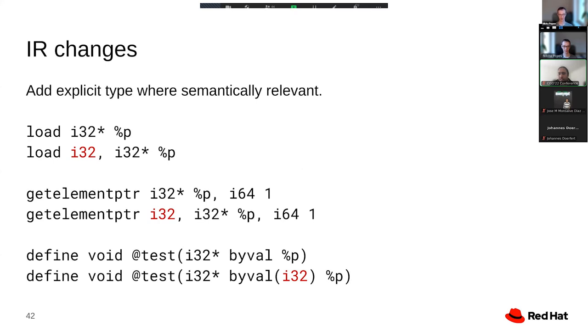At this point I hope I have provided sufficient motivation for why we are doing the migration to opaque pointers and want to talk about the more technical aspects of how it actually is being done. There are multiple parts to that. The first one is some IR changes to explicitly write down types that are semantically relevant. Historically, the load instruction did not specify the type being loaded because it could be derived from the pointer element type.